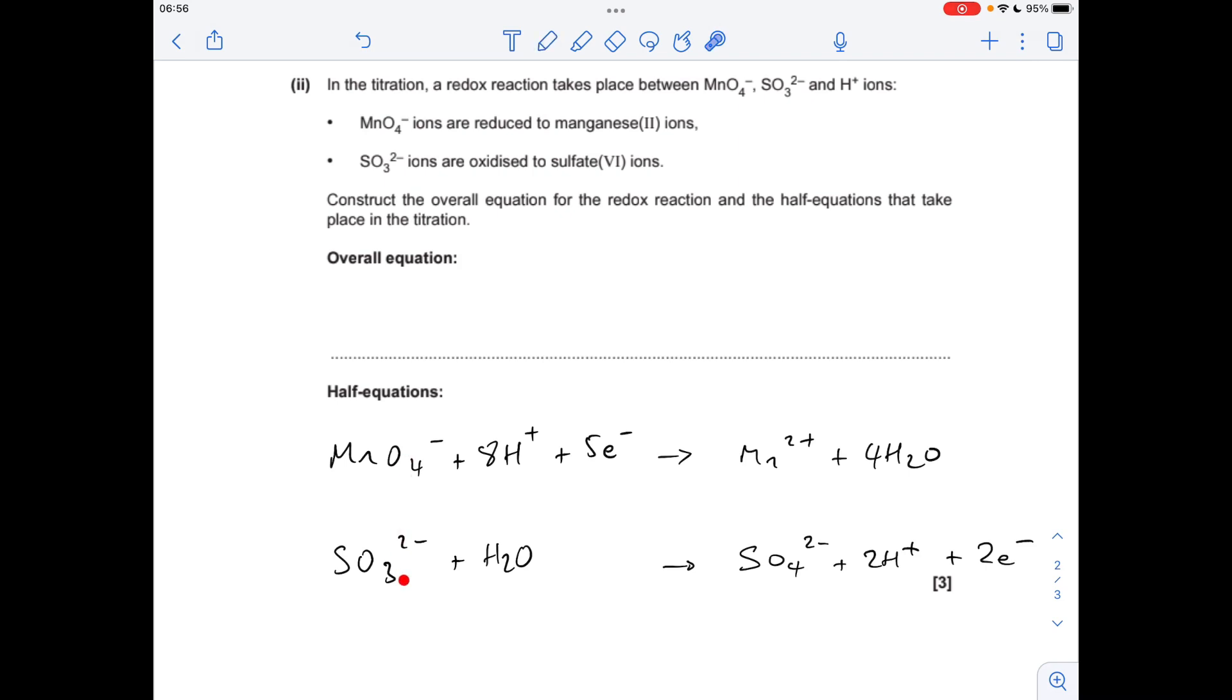Now we've got the half-equations, we just need to add them together so that the electrons will cancel. So you can see we've got 5 in this one but 2 in this one. So this is where that ratio comes from. If we multiply that one by 2, that'll give us 10 electrons in that one. We'll multiply that one by 5, and that'll give us 10 electrons in that one, and therefore the electrons will cancel. So adding those two half-equations gives us this.